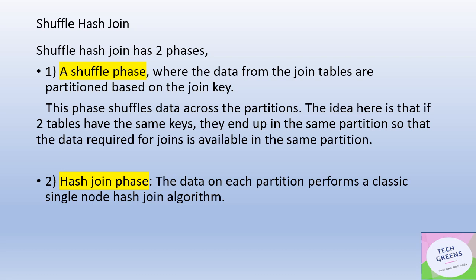Next is the shuffle hash join. It also has two phases and works quite differently from broadcast join. In the first phase, data from the joining tables is partitioned based on the joining key. Under the hood, when Spark repartitions data from the two tables based on the joining key, a shuffle happens — this moves data across partitions. The idea is that for the joining column, we shuffle partitions so that partitions with the same key from both tables can be collocated on the same nodes.